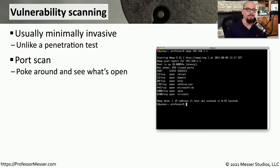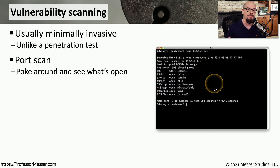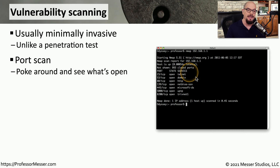One common type of a vulnerability scan is a port scan. That's when we look at a device and determine what ports happen to be responding on that particular IP address. From here, you may be able to gather information about things that might be less than secure. For example, on this device, port 23 running over TCP, which would be the Telnet service, is an open port. Without knowing anything else about this system, we know that Telnet inherently sends information that is not secure — it is not encrypted. So this would be something to bring up as a potential vulnerability on this computer.